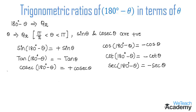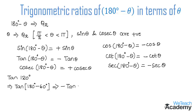Let us now discuss examples using these formulas. Find the value of tan 120 degrees. Tan 120 can be written as tan of 180 degrees minus 60 degrees, since 180 minus 60 equals 120. This is in the form of tan of 180 degrees minus theta, which equals minus tan theta. So we get minus tan 60 degrees. Since tan 60 equals root 3, we get minus root 3 as the value of tan 120 degrees.